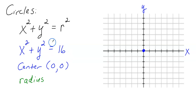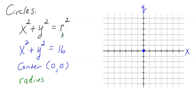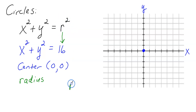To find the radius, it's a little tricky. You have to look at this piece of the equation — this is the radius squared. So what's really going on here is, for this particular problem, the radius squared is 16. r squared equals 16.